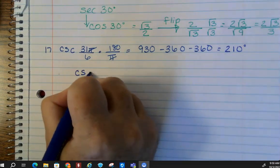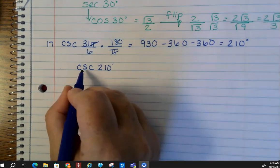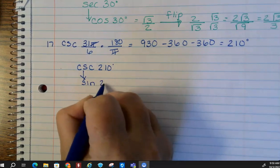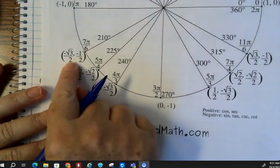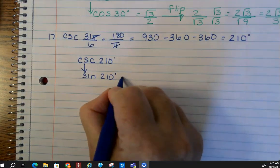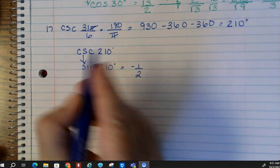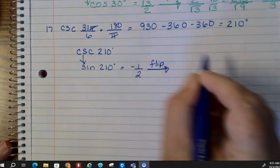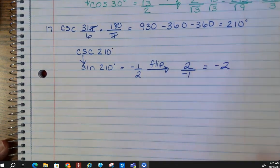So the question here is, what is cosecant of 210 degrees? So the reciprocal of cosecant is sine. So we're going to go to our unit circle. Sine is the second number. So sine of 120 is negative 1 half. But what we've got to do is get it into cosecant terms, so we're going to flip it, and we get 2 over negative 1. So you can leave it like that or just say the answer is negative 2.